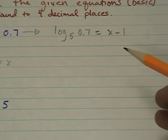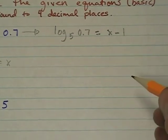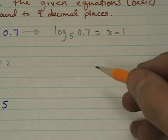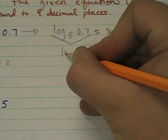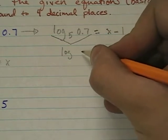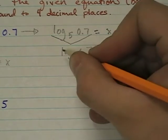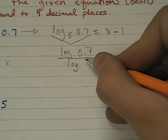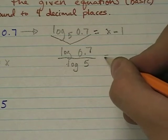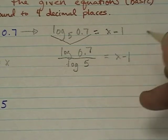The problem is you don't have a log 5 key on your calculator. So you have to use a change of base. And the change of base for log 5 of 0.7 would be the log, log base 10 of 0.7 divided by log of 5, and that equals x minus 1.